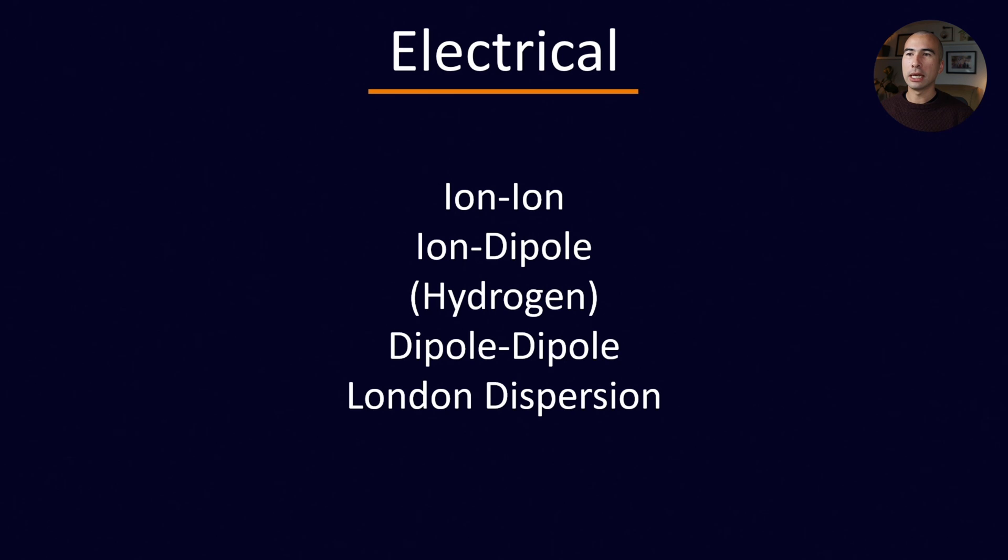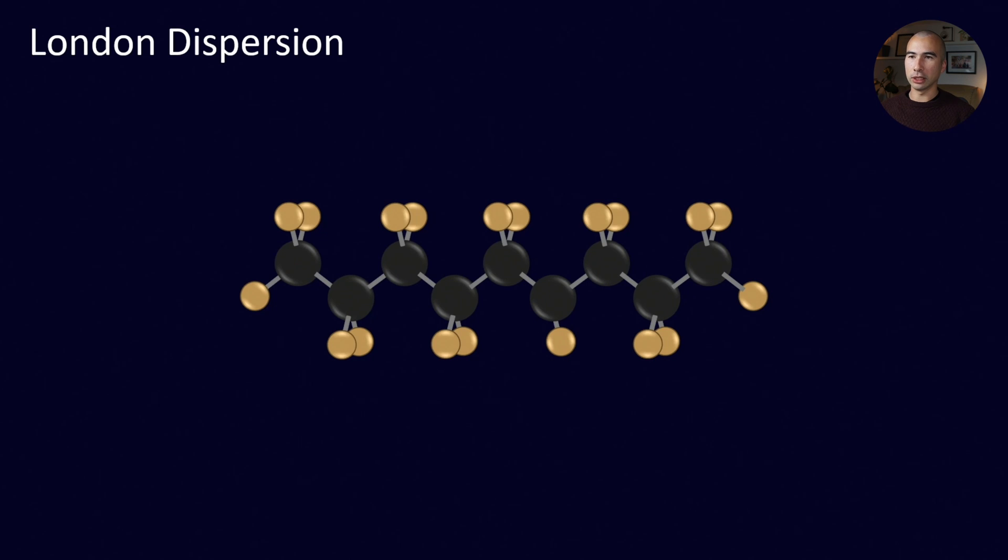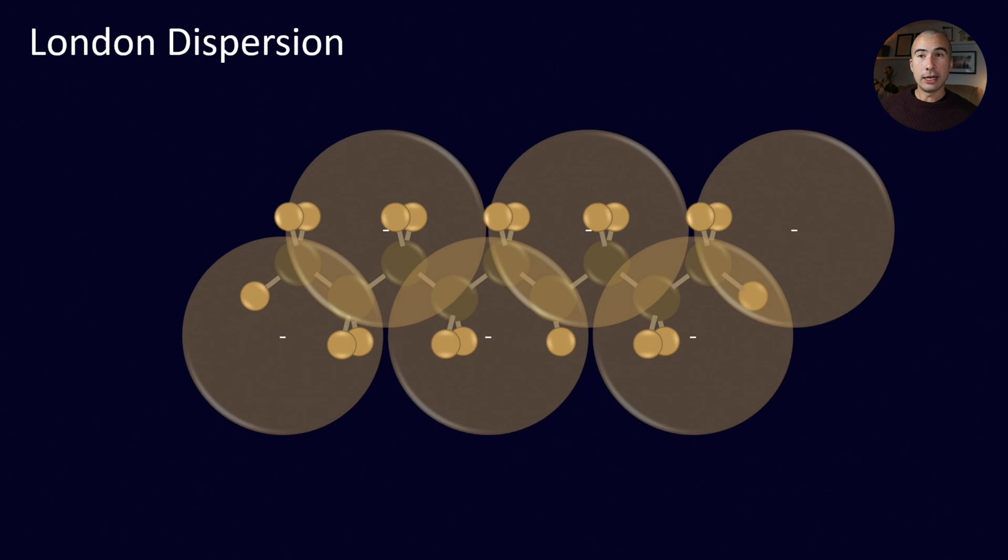So now we've covered ion-ion, ion-dipole, hydrogen bonds, dipole-dipole, and the final one that we need to talk about is London dispersion forces. So London dispersion forces are really interesting. I'm going to take a molecule which has no dipole on it and is basically perfectly symmetrical. This is nonane. It has nine carbons on its chain and it's fully saturated, no double bonds, no nothing. I haven't put all the electrons on here. I just want you to get an idea for, okay, we have a cloud of electrons which surrounds this molecule.